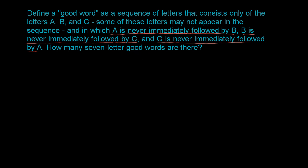So how many seven-letter good words are there? Let's think about the places — we have seven letters: one, two, three, four, five, six, seven. There's no constraint on the first letter, since it's not following anything. So it could be an A, B, or C — there are three possibilities for this first letter.